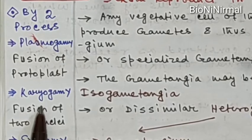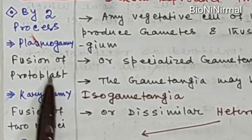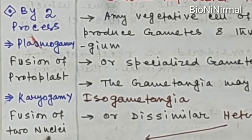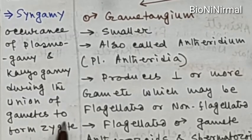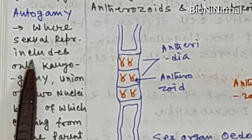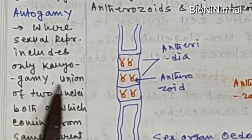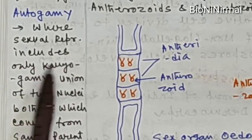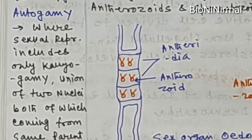Sexual reproduction occurs by two processes: Plasmogamy and Karyogamy. Plasmogamy is the fusion of the protoplast — the protoplasm with plasma membrane. Karyogamy is the fusion of the two nuclei of different gametes. Syngamy is the occurrence of both plasmogamy and karyogamy during the union of gametes to form the zygote. Autogamy is where sexual reproduction includes only karyogamy — no plasmogamy occurs, and two nuclei from the same parent cell are united.